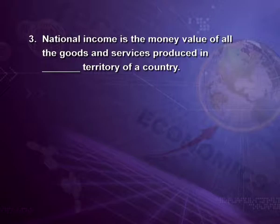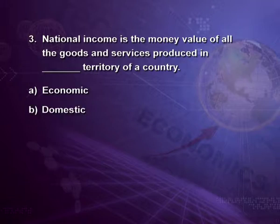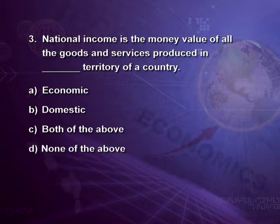Question three: national income is the money value of all the goods and services produced in the dash territory of a country. Options: economic territory, domestic territory, both of the above, or none of the above. The answer is domestic territory of a country — that is option B.